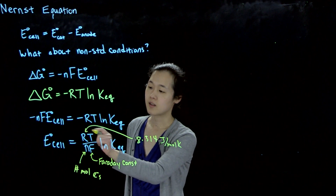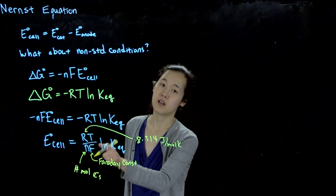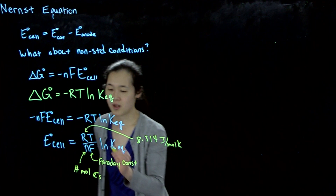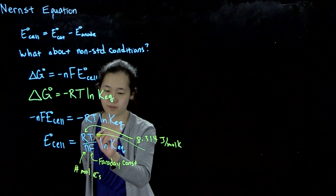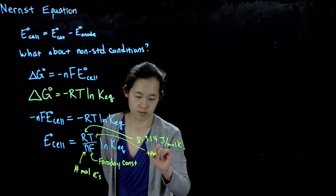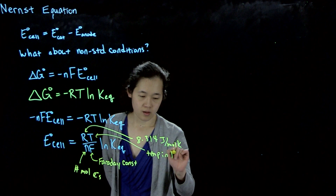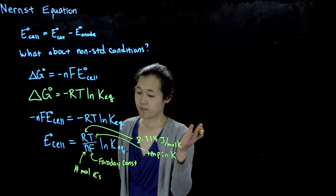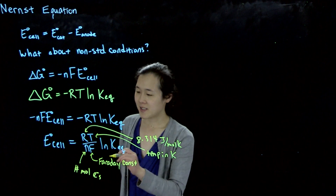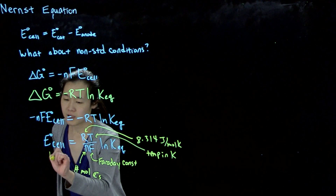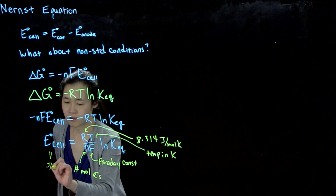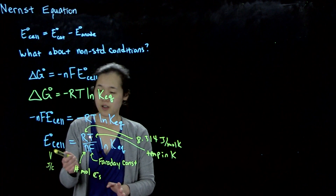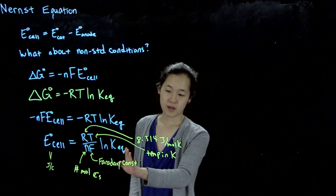I will be giving you these constants — the gas constant and Faraday's constant — on your exam. So you don't necessarily need to memorize them, but you should know them because you'll be doing calculations with them. The temperature is in Kelvin, and due to dimensional analysis, this expression comes out in volts, i.e., joules per coulomb. This is how to convert our standard cell potential into an equilibrium constant.